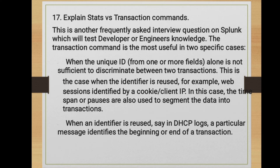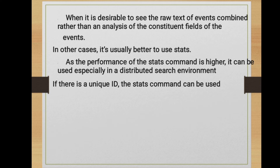Explain the stats versus transaction commands. This is a frequently asked question that tests a developer's knowledge. The transaction command is most useful in two specific cases: when the unique ID alone is not sufficient to discriminate between two transactions — for example, web sessions identified by a cookie or client IP, where time span or pauses are also used to segment data — and when a particular message identifies the beginning or end of a transaction, such as in DHCP logs, and it is desirable to see raw text of events combined. In other cases, it is usually better to use stats, as its performance is higher, especially in a distributed search environment.